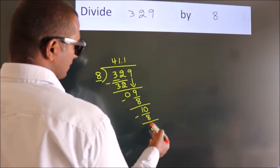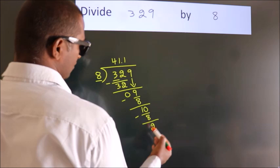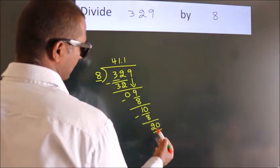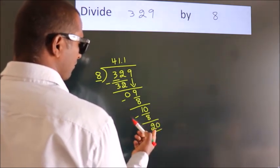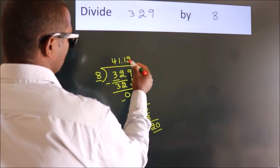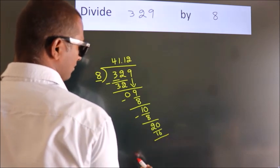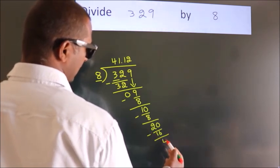After this, we already have the decimal, so directly take 0. So, 20. A number close to 20. Now we subtract. We get 4.